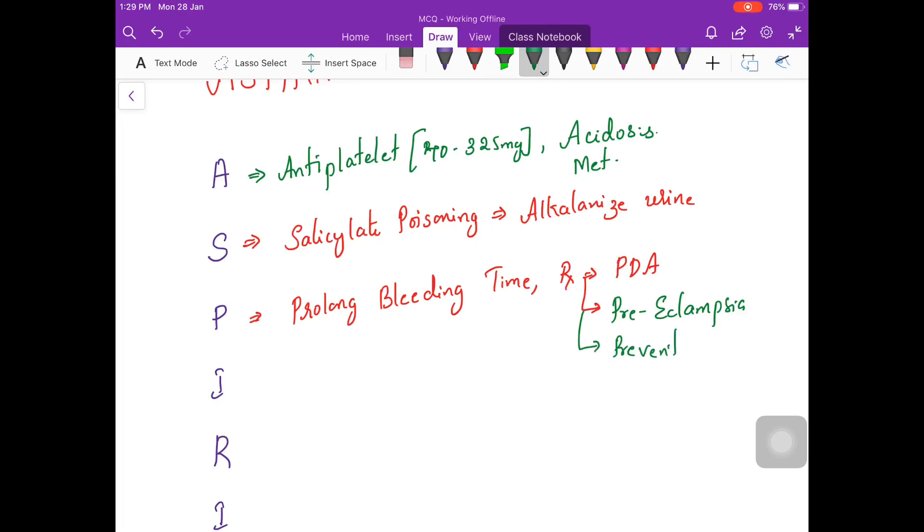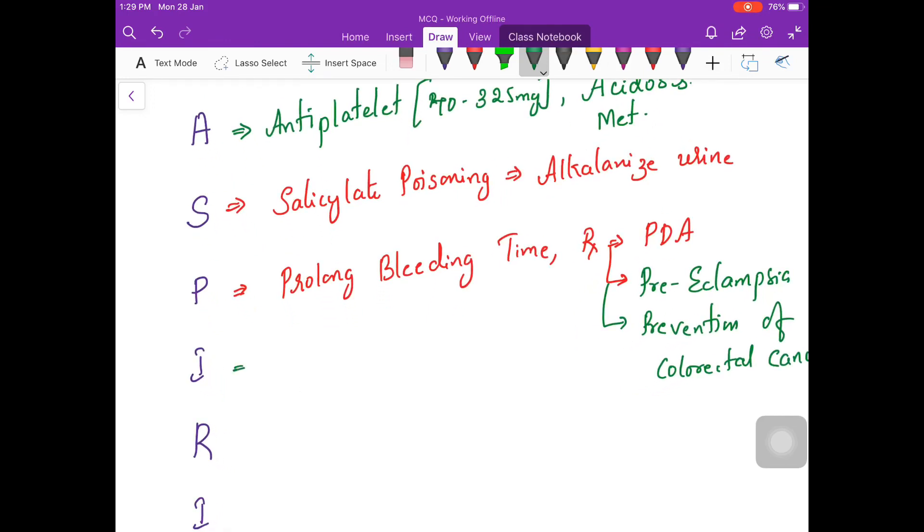Now I stands for it undergoes something called ion trapping which I have discussed in the previous MCQ in the YouTube video. So this ion trapping will lead to gastritis.